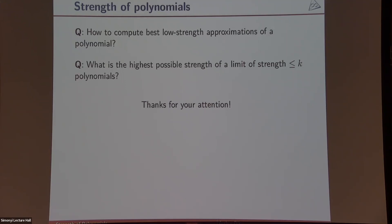Q&A: can one say anything if instead of reducible polynomials one considers products of linear forms? What people study is Waring rank, which is what you get if you take powers of linear forms. That is studied quite a lot, and questions like finding polynomials of high Waring rank are also very much open — it is like finding a needle in a haystack. Products of different linear forms is something I'm not sure people have looked at, but taking the simple objects to be products of degree-one factors is an interesting notion analogous to tensor rank.